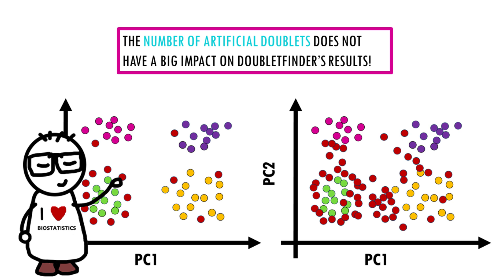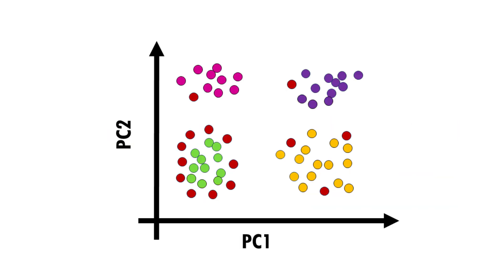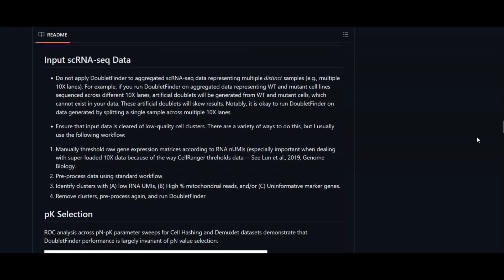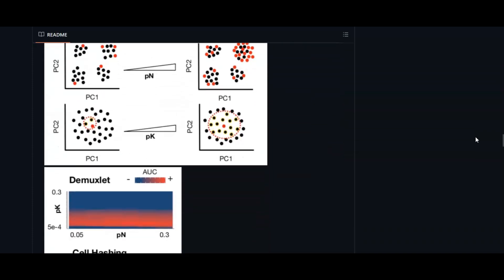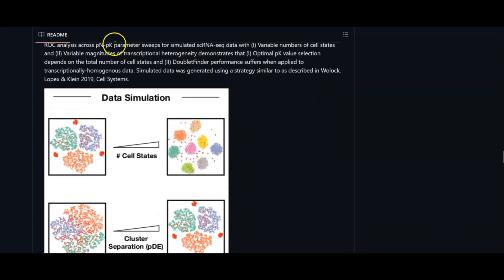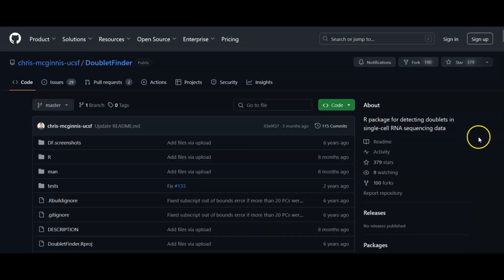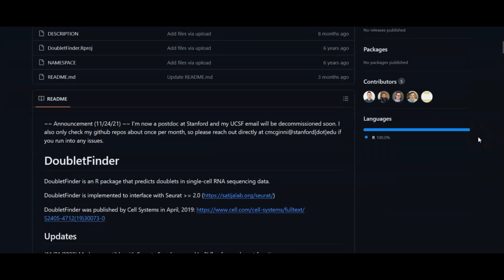What is actually very important is how you calculate your PCs and how big your neighborhood is to calculate the proportion of artificial nearest neighbors. That is why DoubletFinder has a function called paramSweep, which basically screens many different values of PK and PN to find the optimal size. Easy.